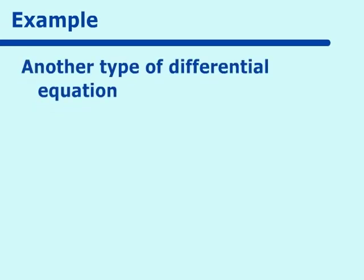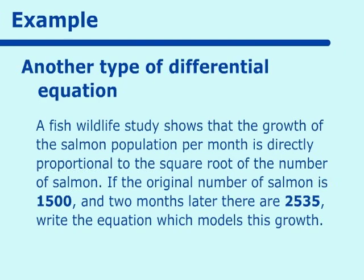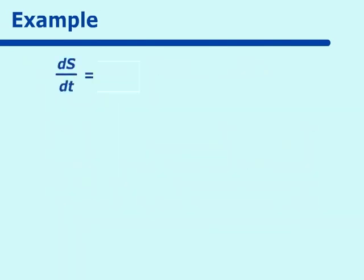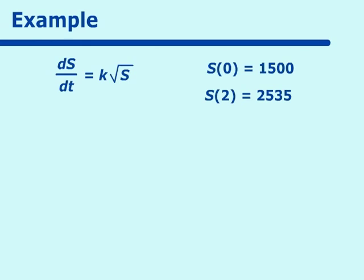The next problem: a fish wildlife study shows that the growth of a salmon population per month is directly proportional to the square root of the number of salmon. If the original number of salmon is 1,500 and two months later they are at 2,535, write the equation which models this growth. This is a square root type differential equation. We have dS/dt equals k times the square root of S, with S(0) equals 1,500 and S(2) equals 2,535.